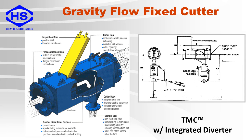This is an example of a launder sampler which is a top mounted cutter, or TMC. These are used for slurry applications and are designed for process lines which are not under pressure. The TMC has a cutter which is placed in the middle of the slurry flow in order to extract a portion of the material. The extracted sample then goes through the exit nozzle, and the main process flow exits to the main part of the sampler.